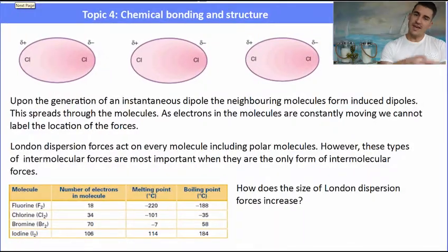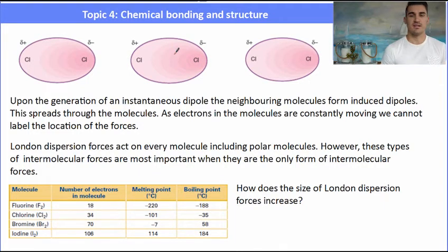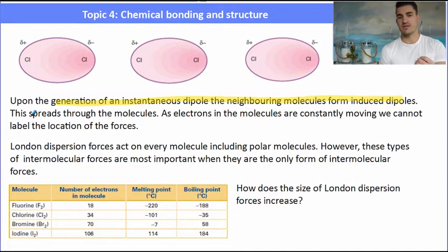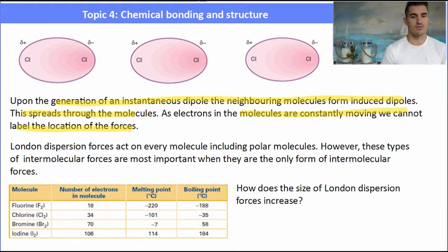If we have a large sample of chlorine molecules and one of them induces a dipole, that induction can spread between the other molecules. We get a build-up of these induced dipoles — alternating positive and negative charges — spreading through our sample due to the movement of the electrons. This is the formation of London dispersion forces.